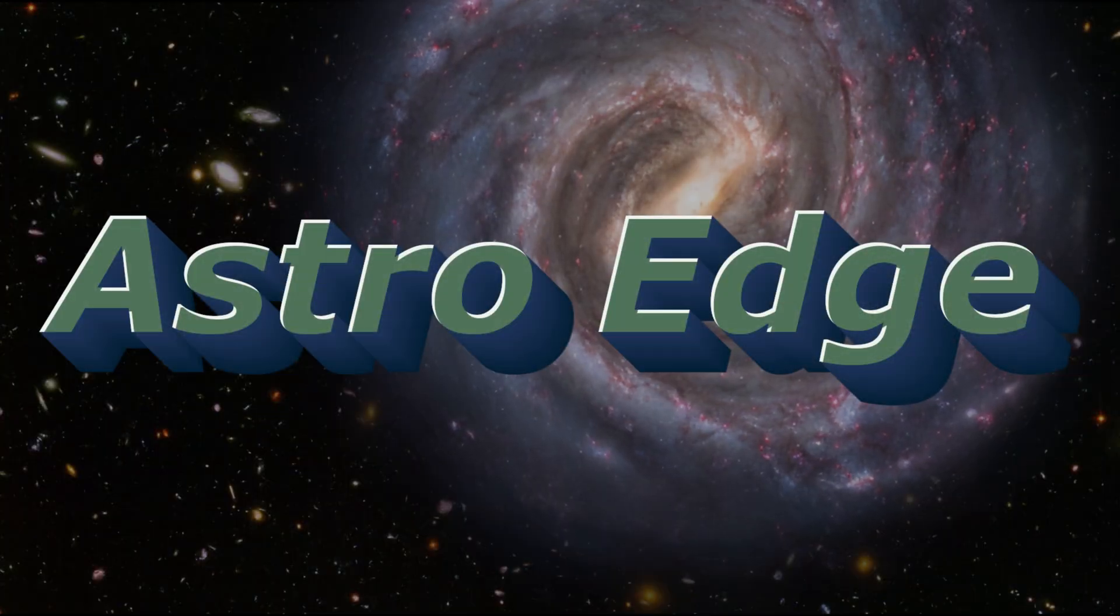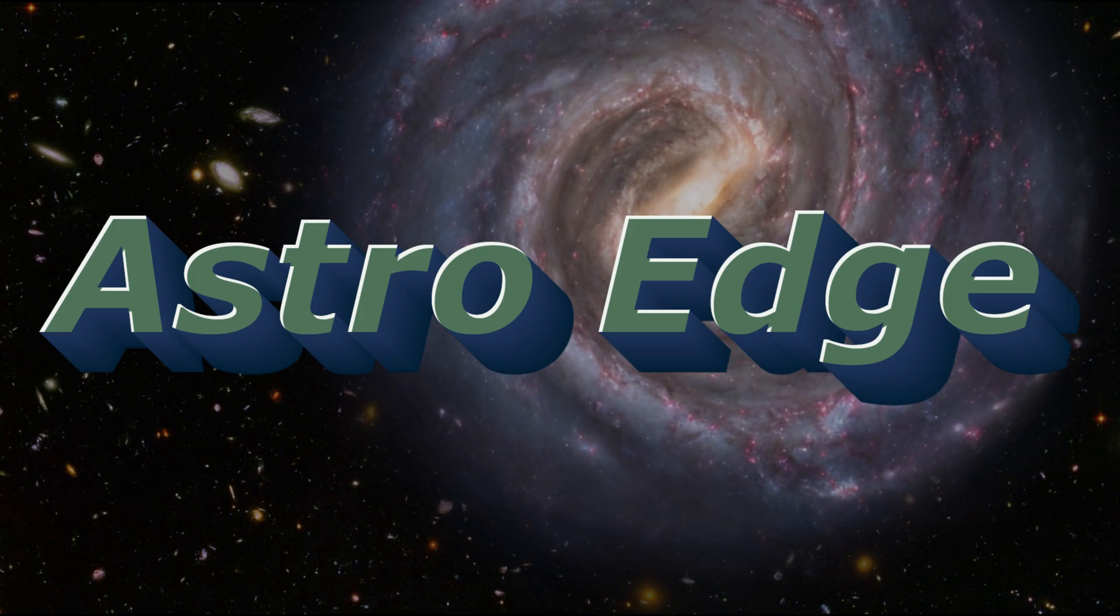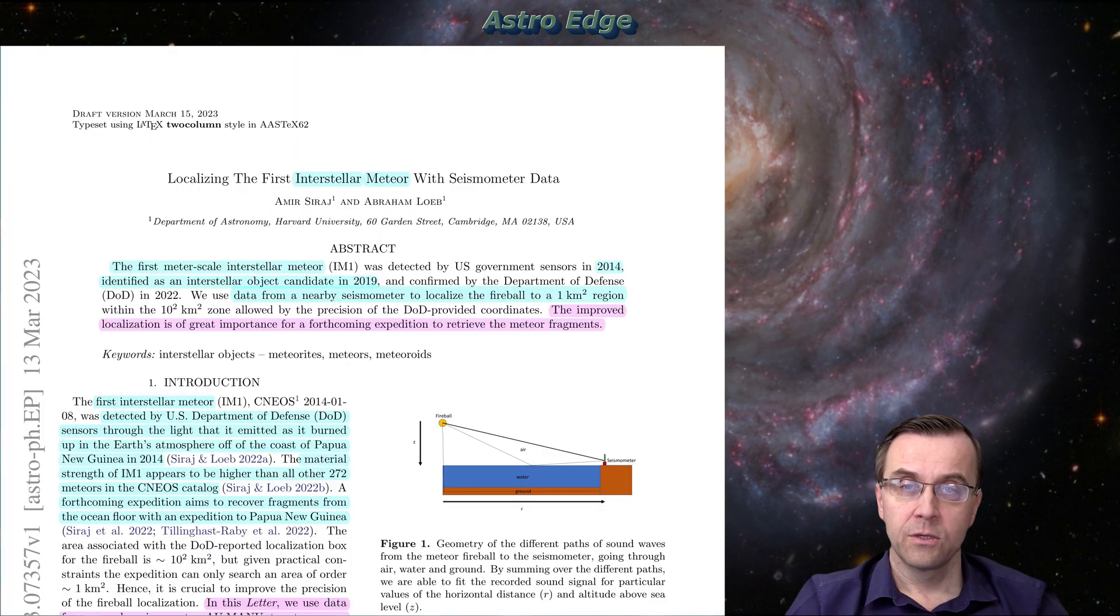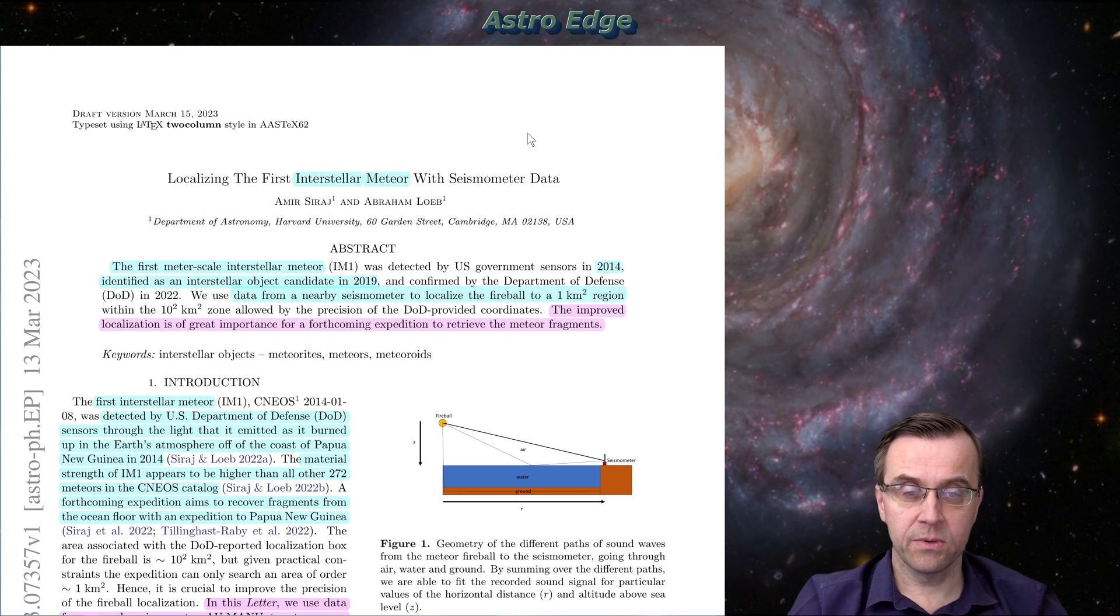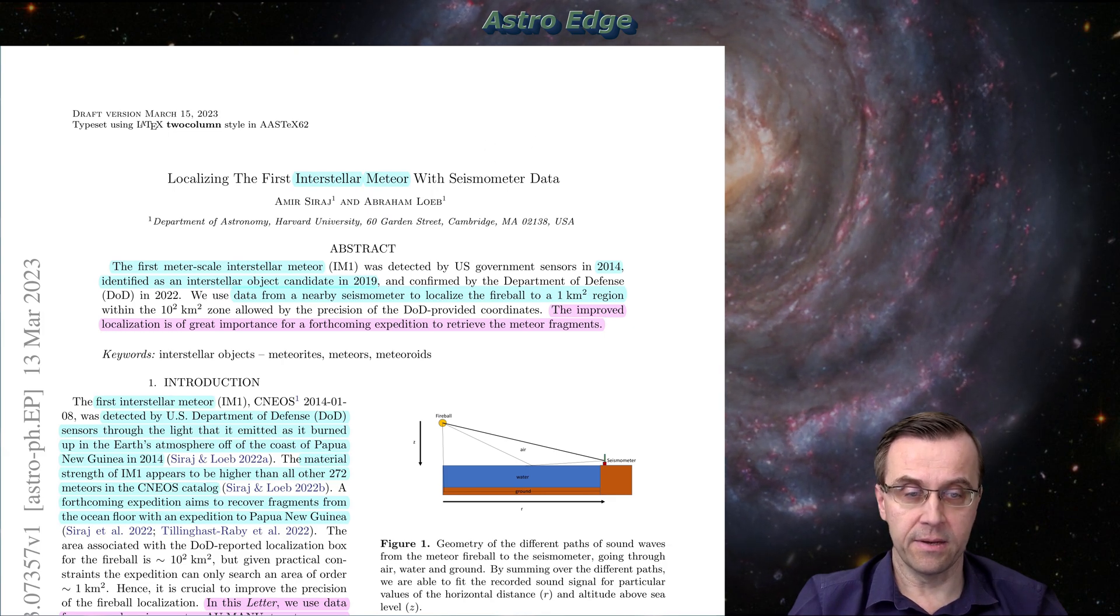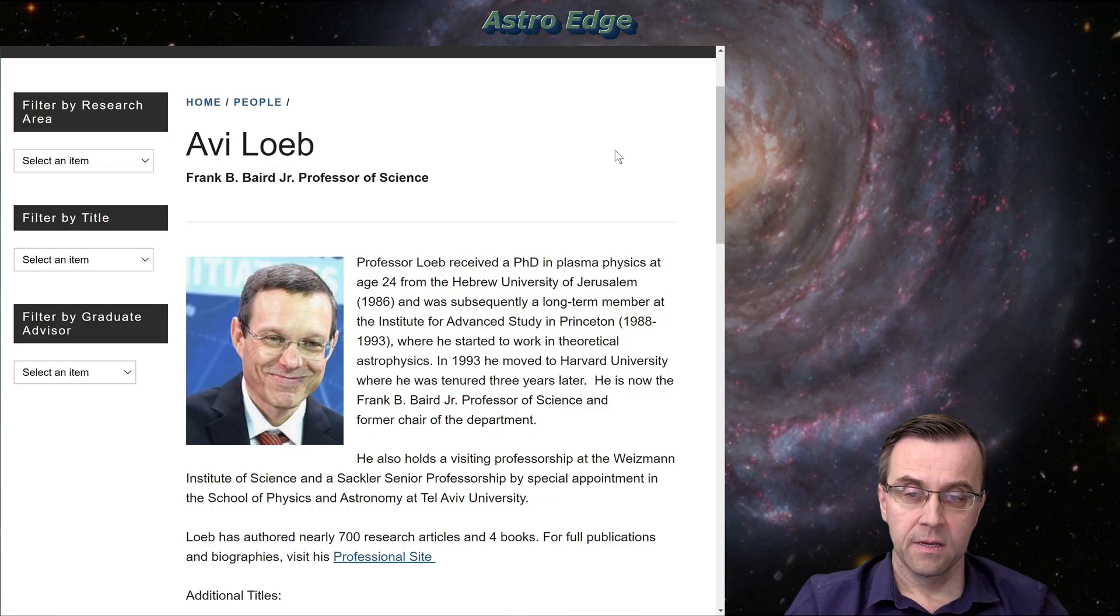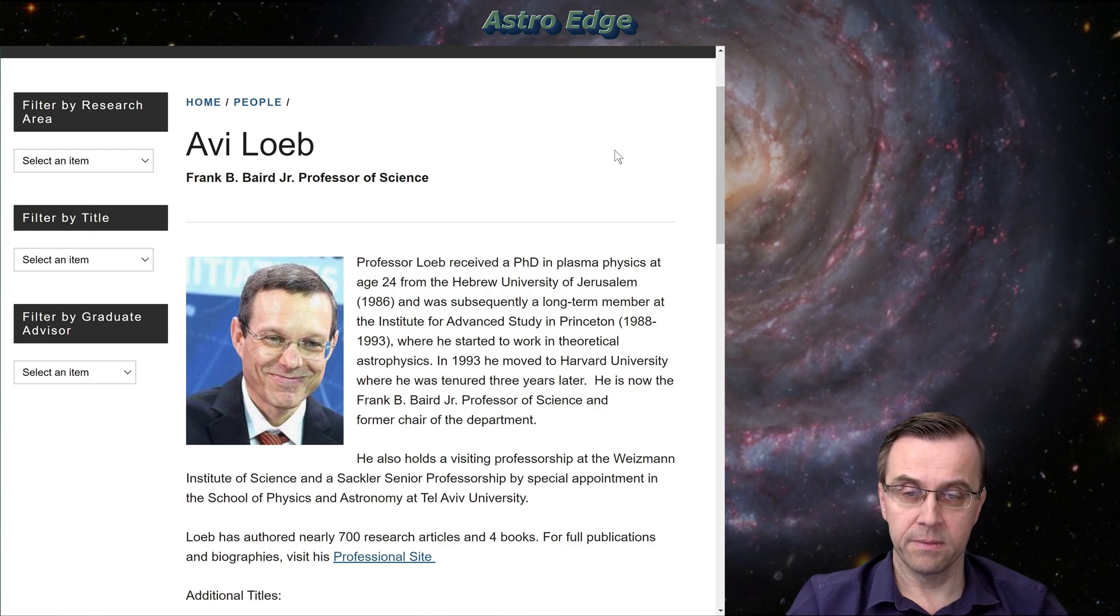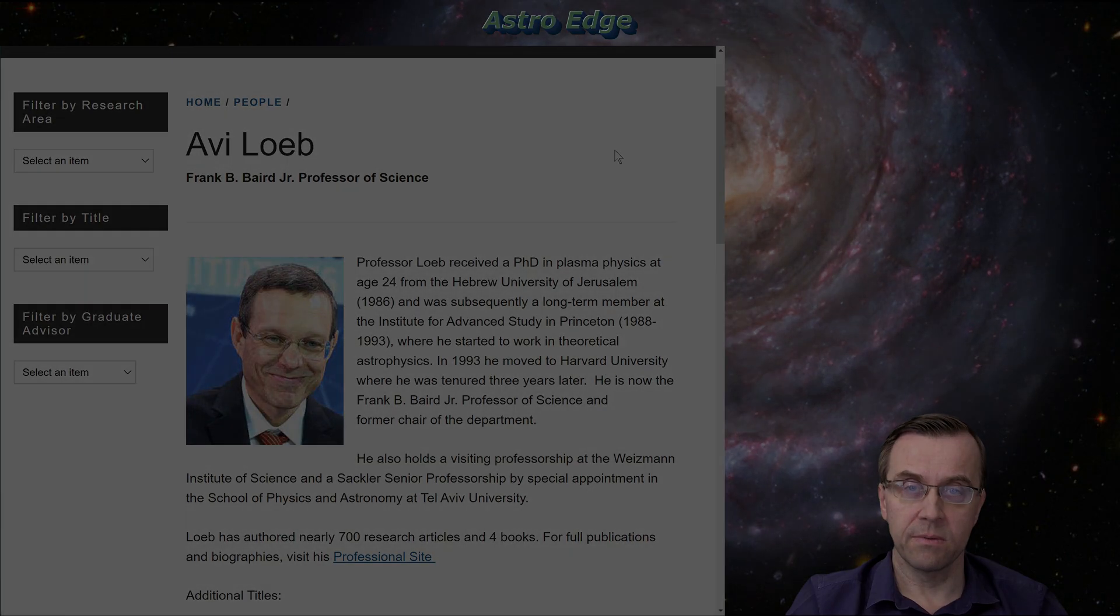Welcome to AstroEdge, weekly broadcast presenting highlights of leading-edge research in astronomy and astrophysics. Today's paper is localizing the first interstellar meteor with seismometer data. The first author is Amir Siraj. The second author is famous astrophysicist Avi Loeb. They're both from Harvard University Department of Astronomy.